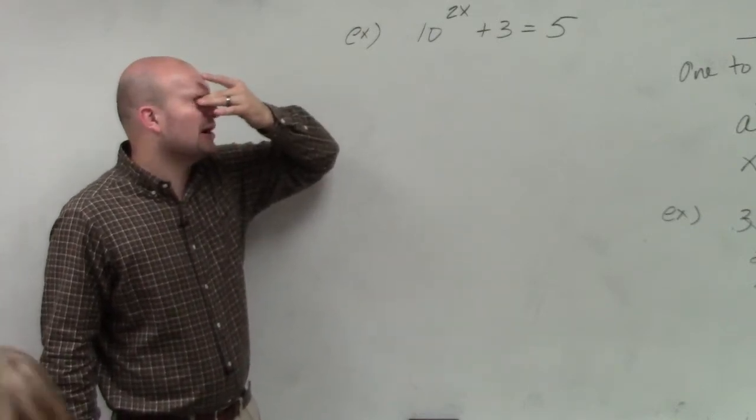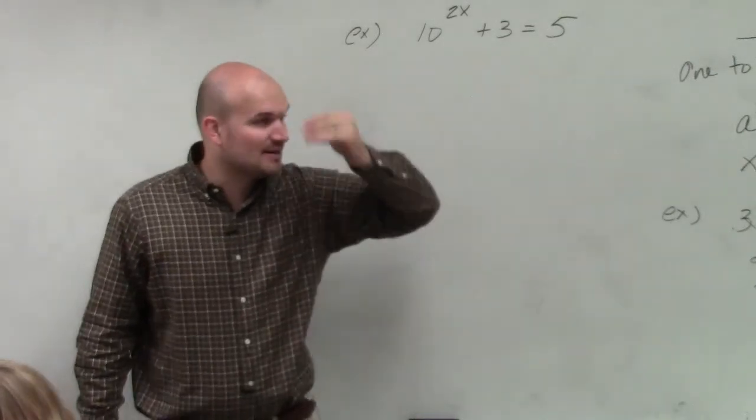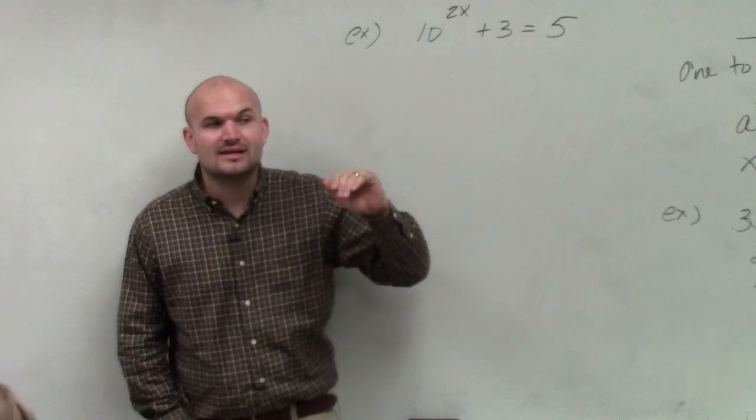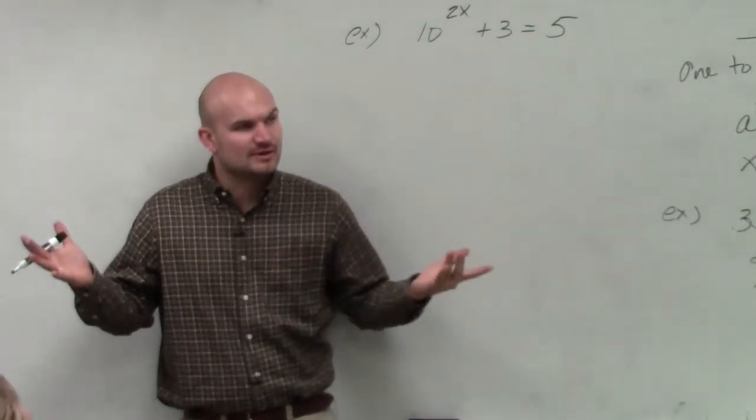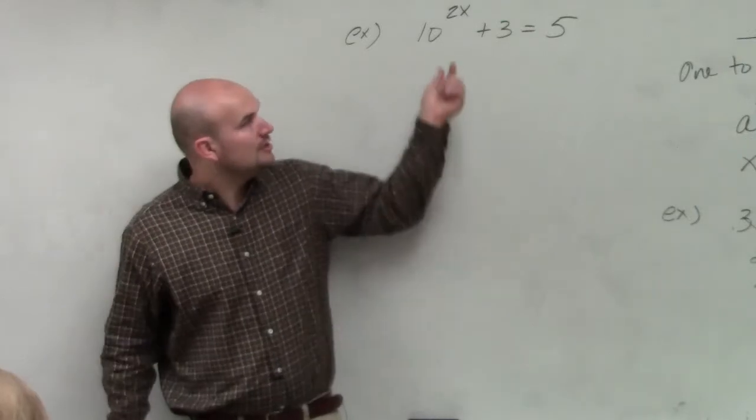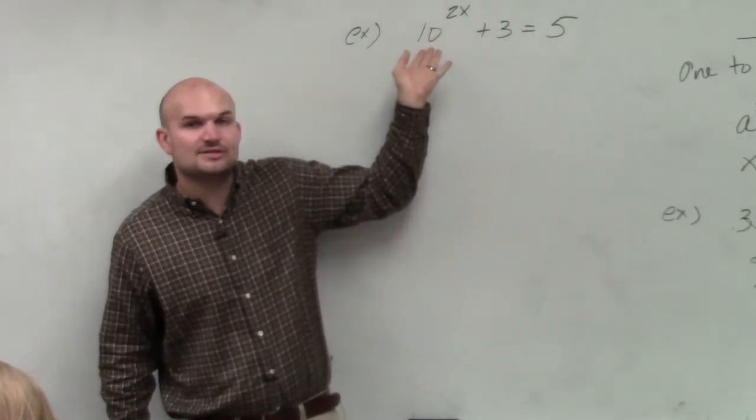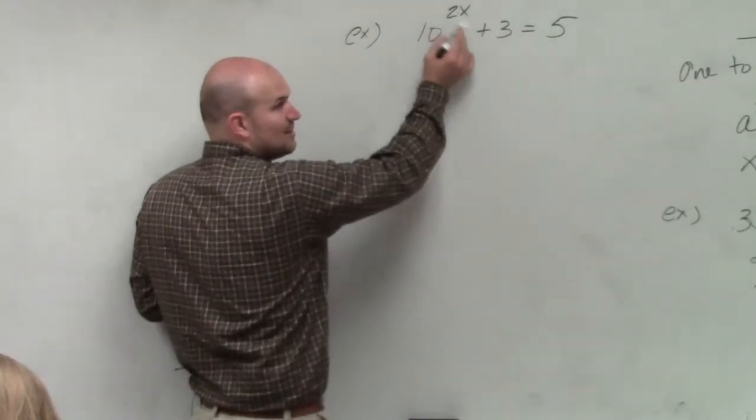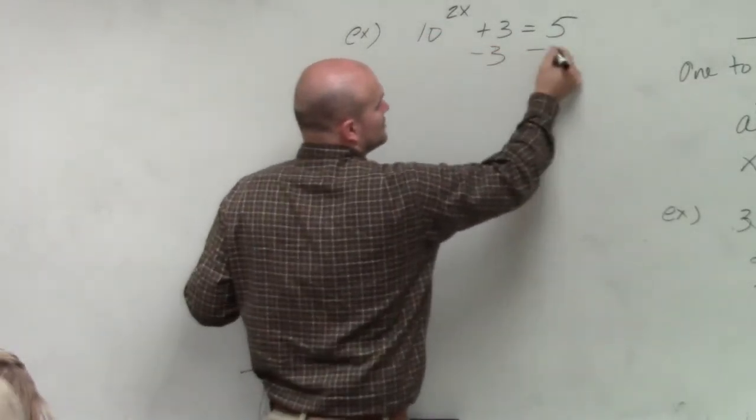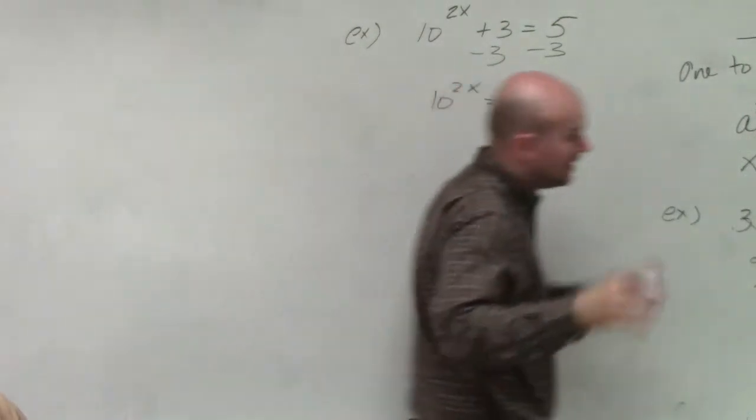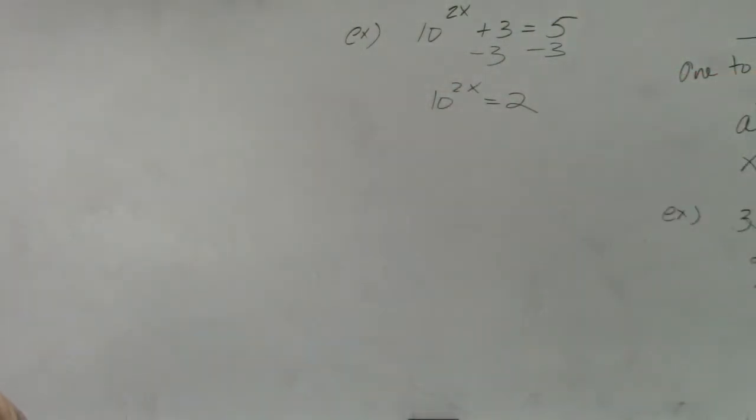Now, let's go through our steps that we talked about. The first thing is to always isolate the exponent. You guys can see my exponent is 10 raised to the 2x. So if I'm going to isolate that, I can see my 10 to the 2x is being added by 3, so I subtract 3. Everybody follow me right there?